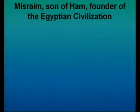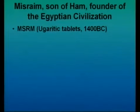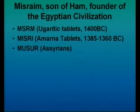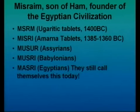Now let's look at Mizraim, the son of Ham. According to biblical Jewish understanding, he was the founder of the Egyptian civilization. In the ancient world, Egypt was known as Mizraim according to the Ugaritic tablets in about 1400 BC; known as Misry according to the Amarna tablets; known as Musur amongst the Assyrians; Musri amongst the Babylonians; and Masri by the Egyptians — and even today still called Masri.